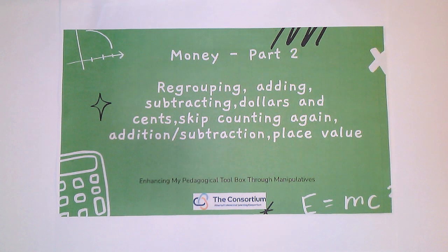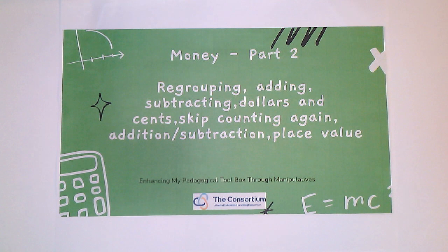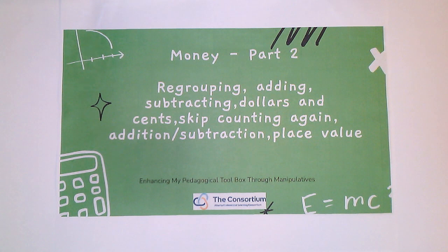Welcome back. We're on part two of money. We left off with students knowing how to identify money, the value of money, pretty proficient at doing some of the basic trades — five pennies for a nickel. So we want to go a little bit further than that now. As we start moving into grade two and up, we're really starting to look at using that notion of regrouping, the trading that we were doing in the earlier starting points with our money.